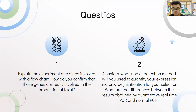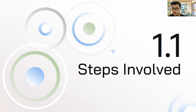The first question in the PBL is to explain the experiment and steps involved, with a flowchart, and how to confirm the gene that is really involved in the production of taxol. The second question is to consider what kind of detection method we will use and what the differences are between results obtained by quantitative real-time PCR and normal PCR.